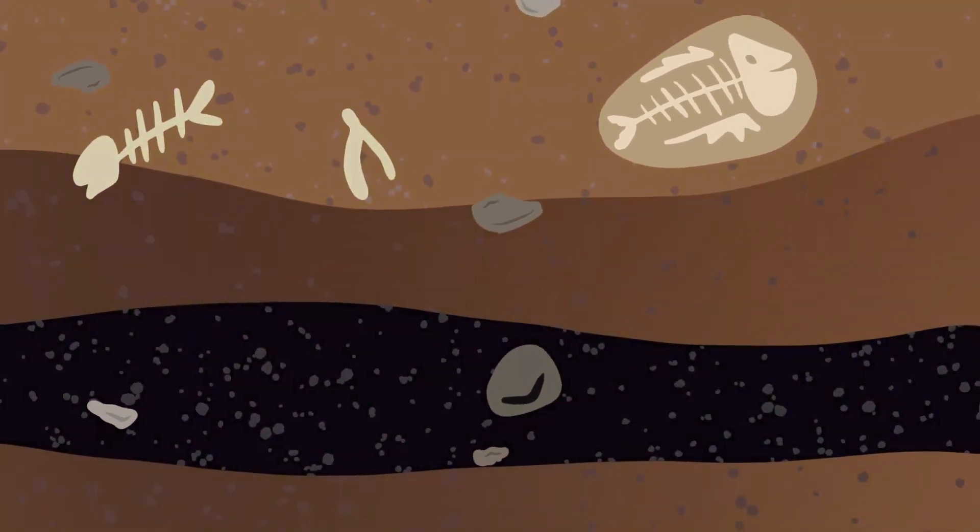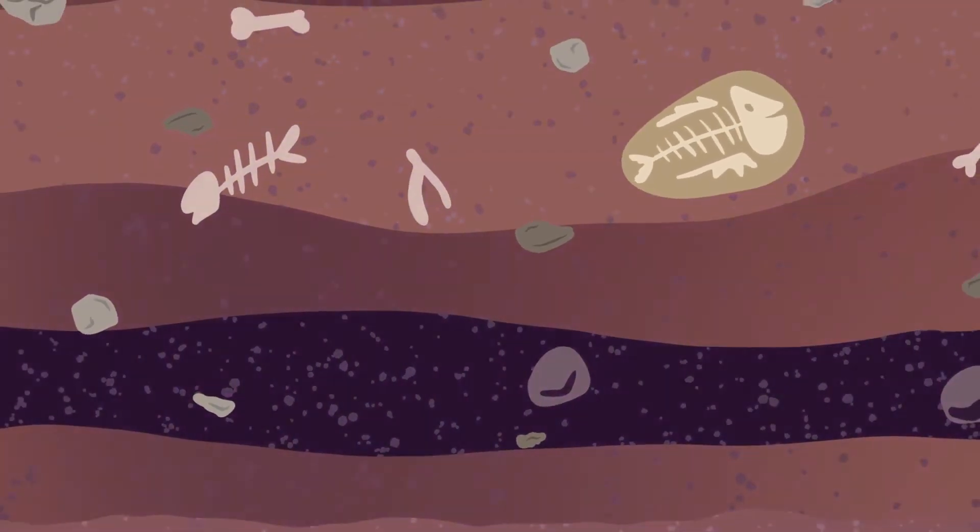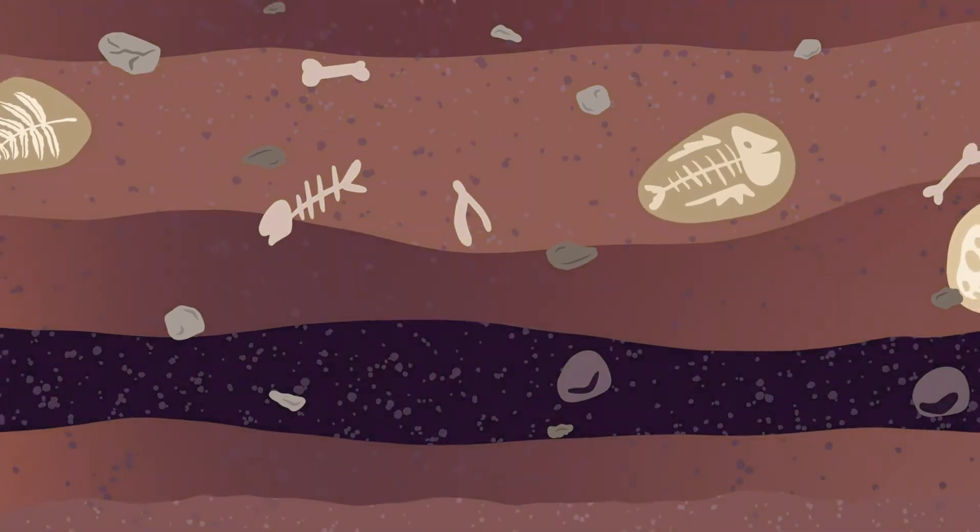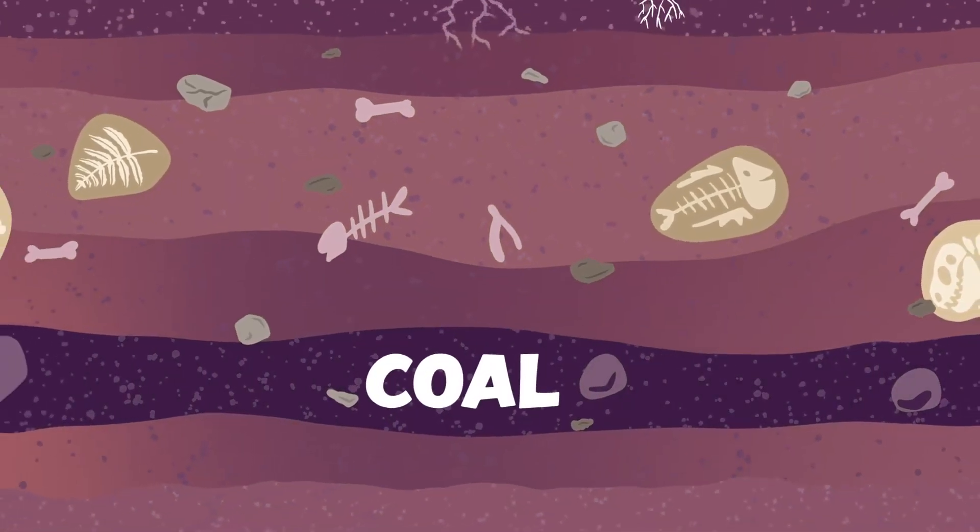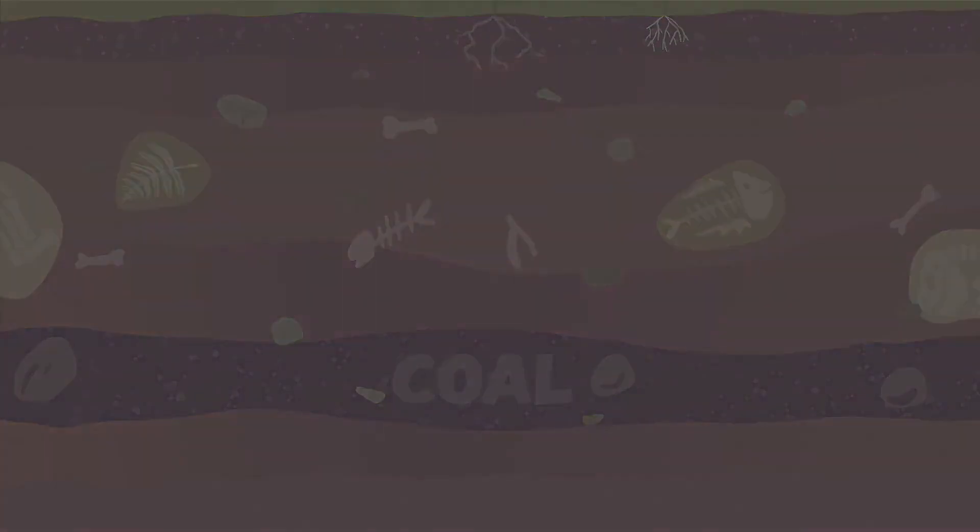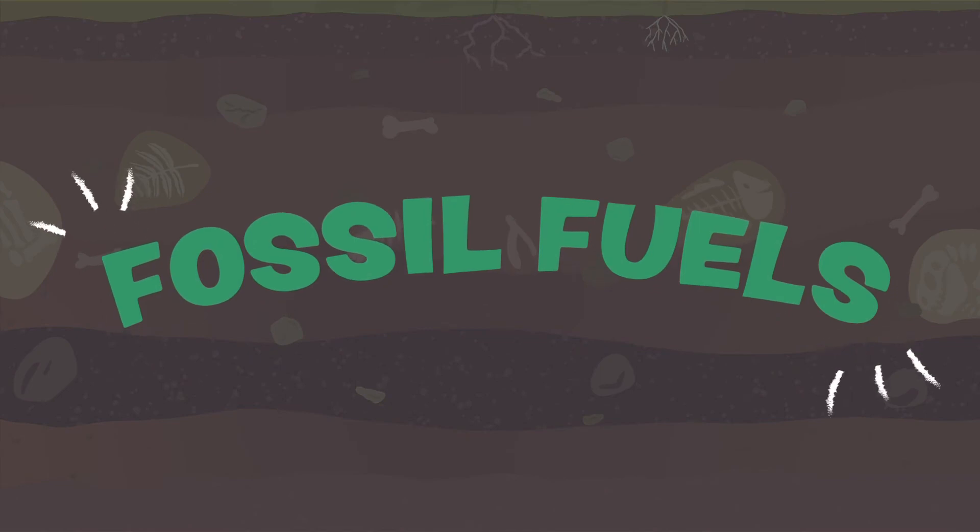These remains get squished and cooked by lots of pressure and heat, and then they turn into oil, coal, and natural gas. We call these products fossil fuels because they're created from the fossils of dead plants and animals.